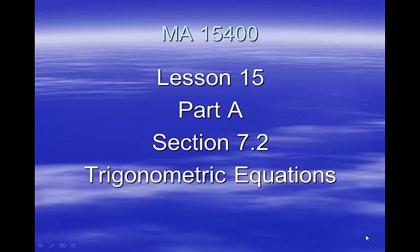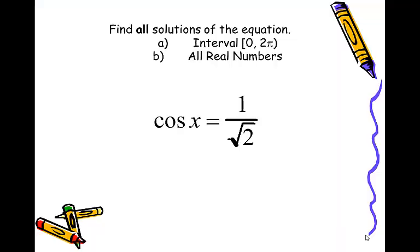Well, here we go with lesson 15. We're going to break lesson 15 into two parts, parts A and B, and this covers section 7.2. So we're leaving chapter 6 and we're skipping over chapter 7.1, which is some really nasty identities — you're going to be happy we skipped that. And now we're doing trigonometric equations.